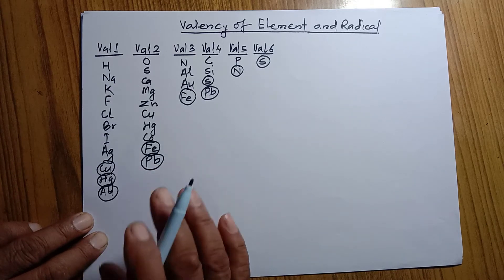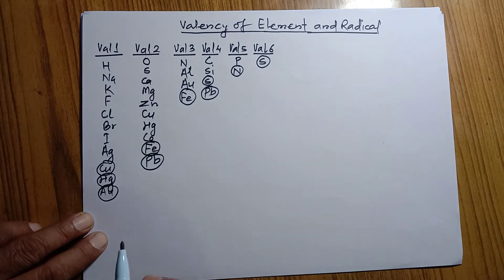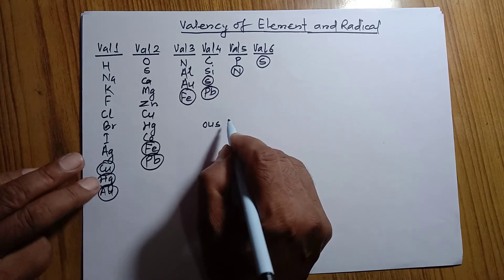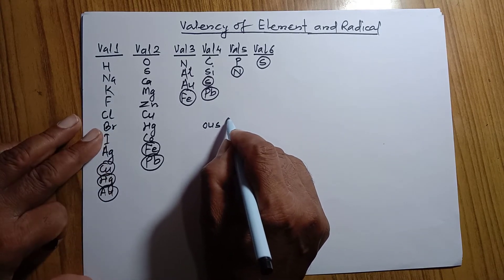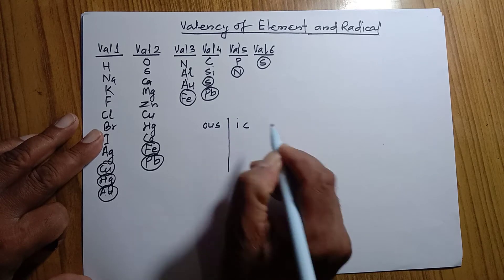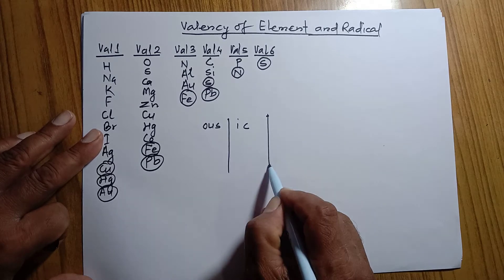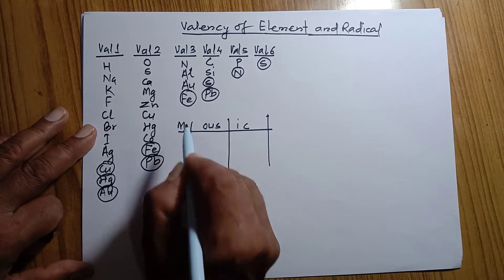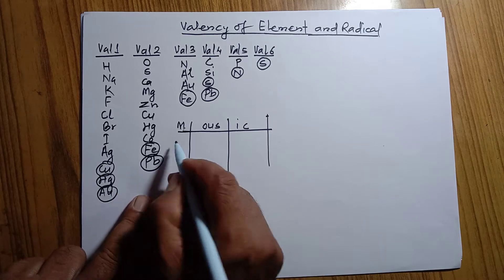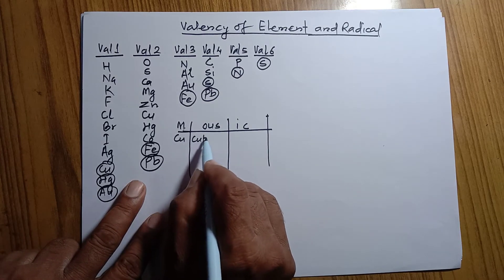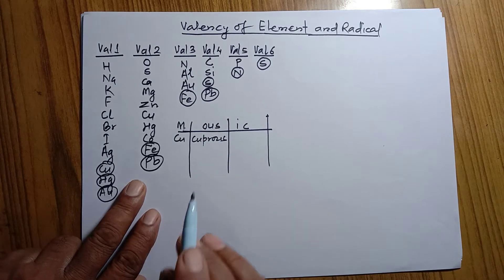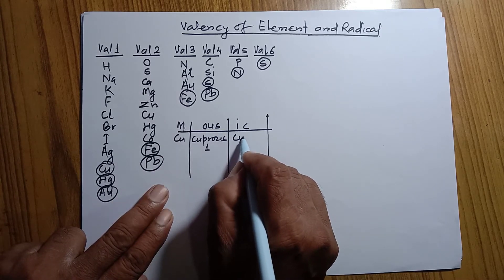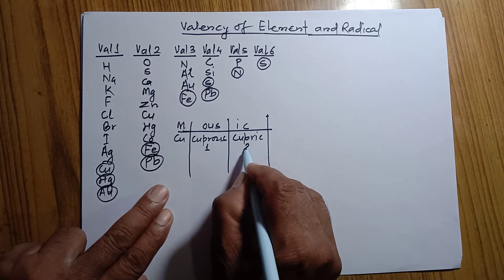In case of metals, variable valency can be represented by the suffixes '-ous' and '-ic'. For example, for the metal copper — if 'cuprous' (C-U-P-R-O-U-S) is used, then its valency is 1. And if the same copper is called 'cupric' (C-U-P-R-I-C), then its valency is 2.